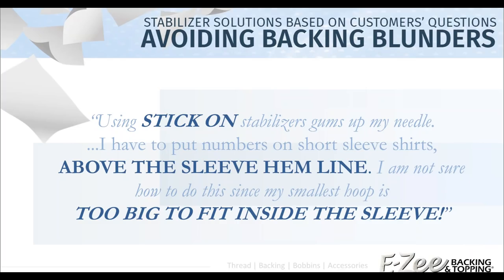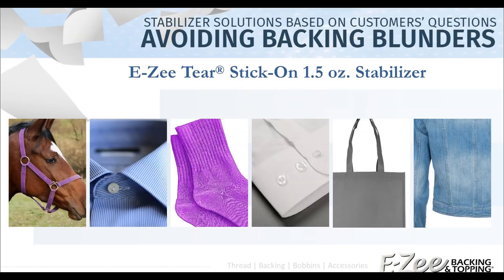Stick-on backing is a stabilizer that has some adhesive on it, and it usually has a release paper. Once you take that paper off, you have this nice adhesive on the back side. What do you do when you need to embroider on the hem of a sleeve or any part of a garment that you can't hoop? Here are some examples of garments you might use this type of backing for: think of the cuff of a shirt, the collar of a shirt, the hem of a sock, the top edge of a bag, or the bottom edge of a jacket. Using this type of stabilizer is going to allow you to do that.